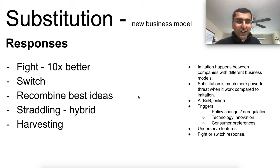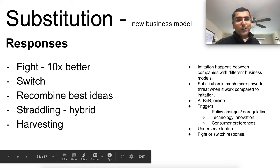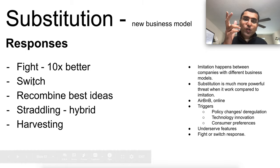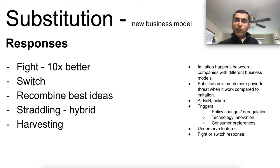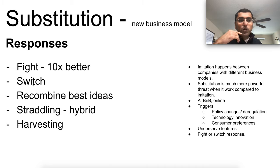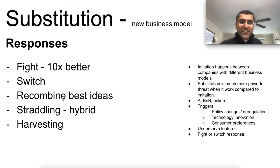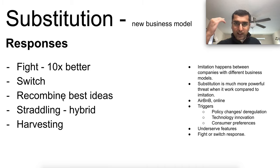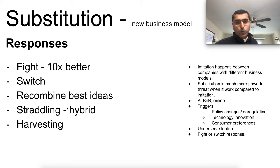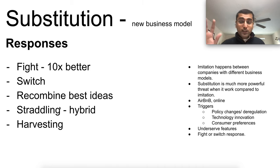If you can't make your product 10x better, you're better off switching yourself — harvest, take profits, and then switch. Don't switch too quickly because you'll lose your cash flow advantage. Wait for the time when your current business becomes unprofitable. You can also recombine the best ideas from competitors — take what really works, like online trading adopted from new competitors for traditional offline clients. Straddling means running your dominant business model while also trying the new competitive model for new customers.